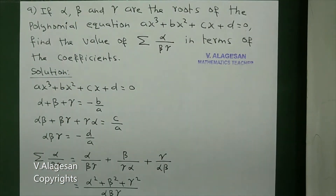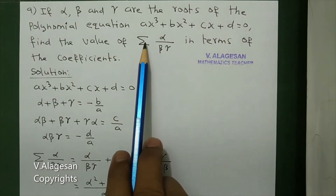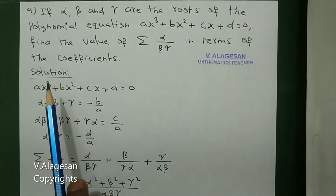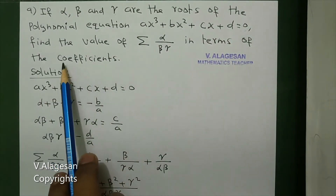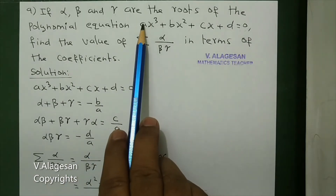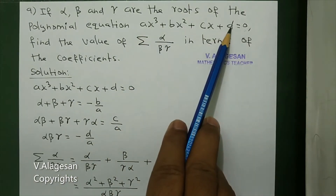Alpha, beta, gamma are the roots of this equation. Now we have to find this in terms of coefficients. Coefficients means a, b, c, d — these are the coefficients.